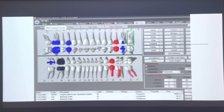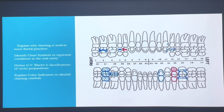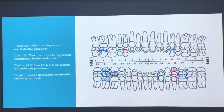Charting is the same thing — if you know the basics it'll be easy to navigate, especially being the technology generation. Ask yourself why charting is used in most dental practices: obviously to keep organized and know what you did on the patient, but also legally to have a record in case there's a lawsuit. You need to identify chart symbols to represent conditions in the oral cavity, define GV Black's six classifications of cavity preparations, and understand color indications for charting symbols.